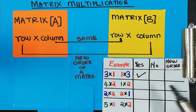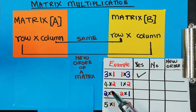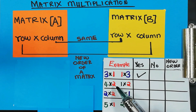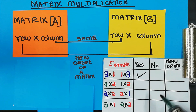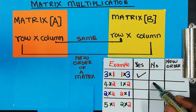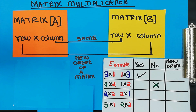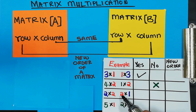With the second part, we have a 4 by 2 matrix and a 1 by 2 matrix. These two numbers in the middle are not the same, so we cannot continue with this matrix multiplication.